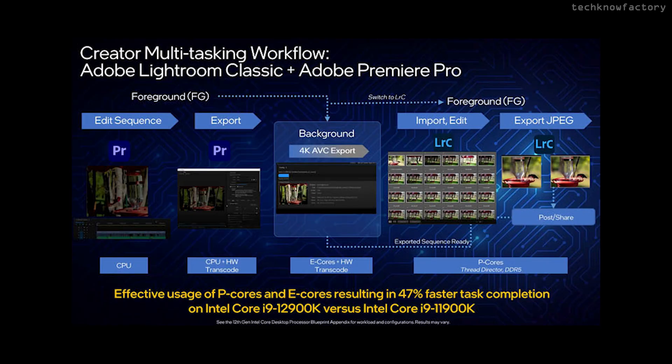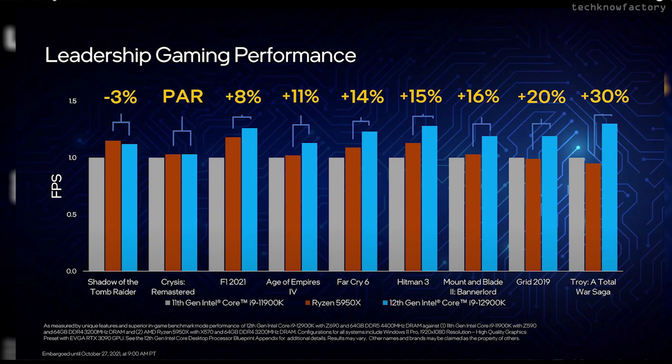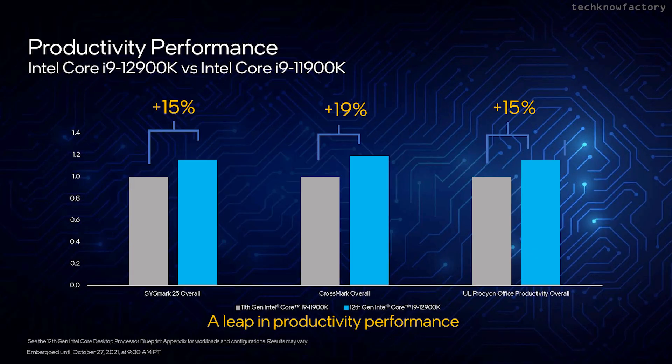According to Intel's own claims, for productivity-related tasks and single-threaded applications the 12th gen is 28% faster compared to the previous generation. For gaming, the 12900K versus the Ryzen 5950X shows 3% to 30% improvement depending on the game. Overall, compared to the previous 11th generation, Intel's 12th gen shows 19% to 28% gaming improvement.